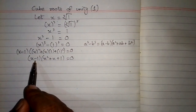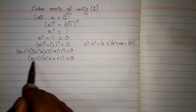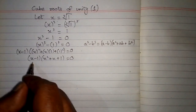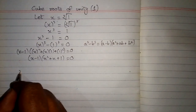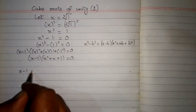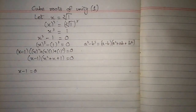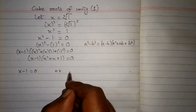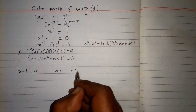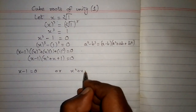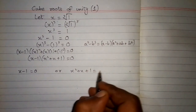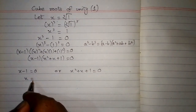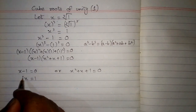Now we have two factors and the product of these factors is 0, so either x minus 1 equals 0, or x squared plus x plus 1 equals 0. From the first factor, we get x is equal to 1.